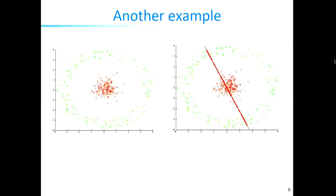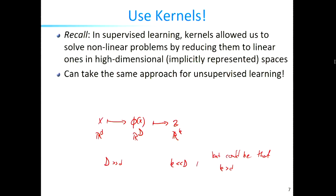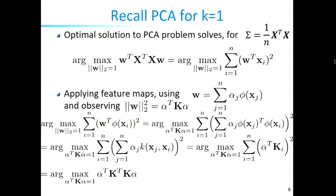A shortcoming is that we're just working with linear models in the original space. As with linear classification, using linear models is somewhat limited — there are datasets that are not linearly separable. One way to address this is to apply linear hypotheses to nonlinearly transformed data using nonlinear feature maps and the kernel trick, which allows us to implicitly work with very high-dimensional feature spaces. This led us to a kernelized version of PCA at the end of last lecture.